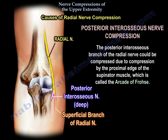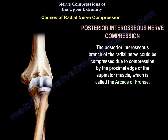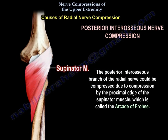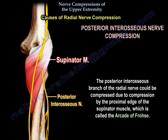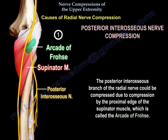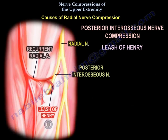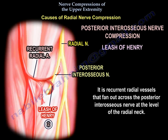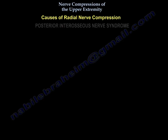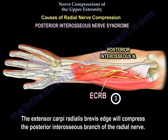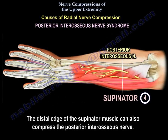The posterior interosseous branch of the radial nerve can be compressed by the proximal edge of the supinator, which is called the arcade of Frohse. It can also occur due to the leash of Henry — recurrent radial vessels that fan out across the posterior interosseous nerve at the level of the radial neck. Additionally, the extensor carpi radialis brevis edge and the distal edge of the supinator muscle can also compress the posterior interosseous nerve.